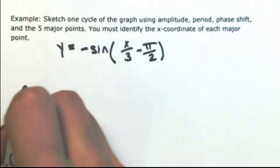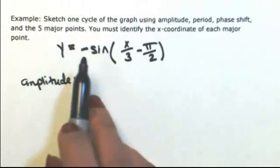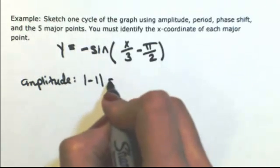So the first thing is to find the amplitude, and the amplitude is in front of our function. Take the absolute value of negative 1, so we get 1.